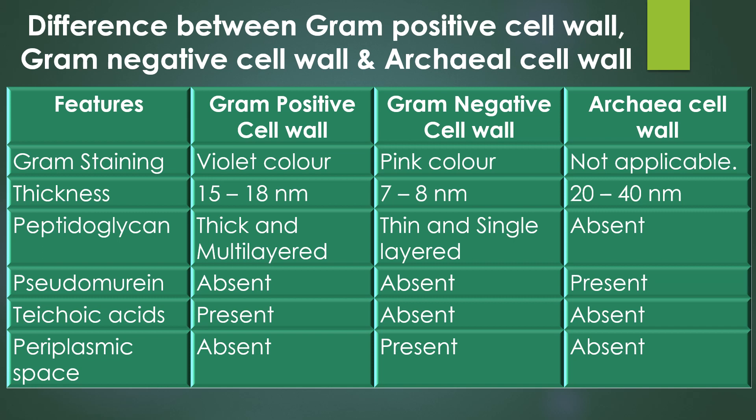Now, a comparison between gram-positive bacterial cell wall, gram-negative bacterial cell wall, and archaea cell wall. Regarding gram staining: gram-positive cell wall exhibits violet color, gram-negative cell wall exhibits pink color, and the gram staining technique is not applicable for archaea. The thickness of gram-positive cell wall is 15 to 80 nanometers, and for gram-negative it is 7 to 8 nanometers.